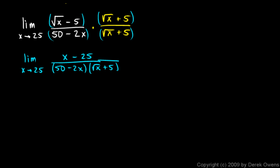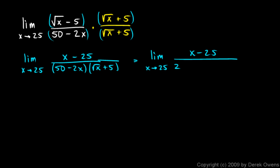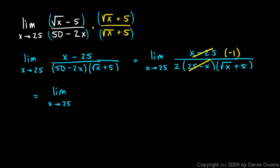Now nothing cancels out yet, but notice this factor — we've got a 50 and a 2. I can factor a 2 out of that. So this becomes the limit as x approaches 25 of x minus 25 over 2 times 25 minus x, times the square root of x plus 5. Now 25 minus x is the opposite of x minus 25. So if I cancel those out, I'll end up with a factor of negative 1 up there. This leaves me with the limit as x approaches 25 of negative 1 over 2 times the square root of x plus 5.